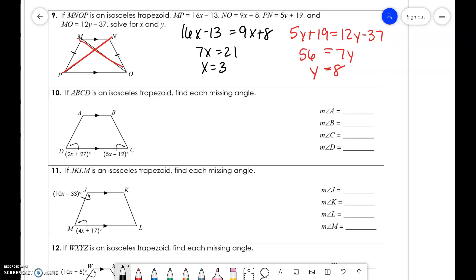For over here, base angles are equal. So, 2X plus 27 equals 5X minus 12. 3X equals 39, X equals 13. So, when we plug this in to 2 times 13 plus 27, we get angle D to be 53, which means C is 53. Then, to find A and B, we do 180 minus 53, and 127 is both of those angles.